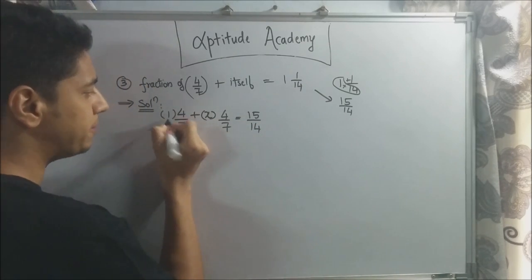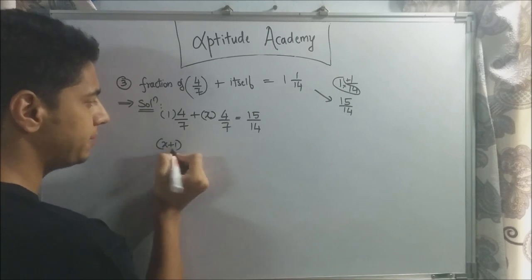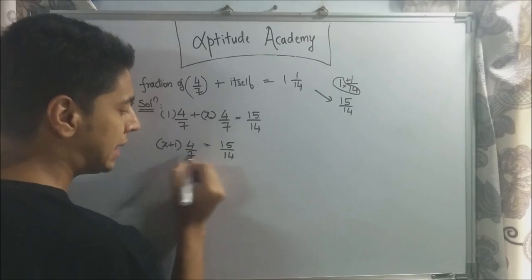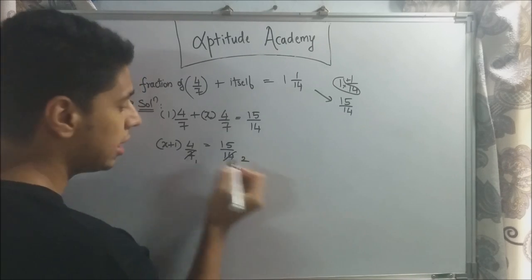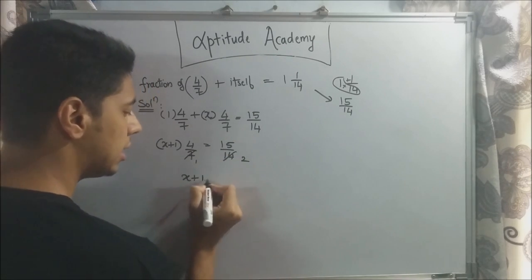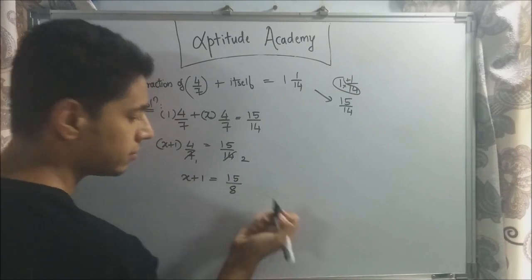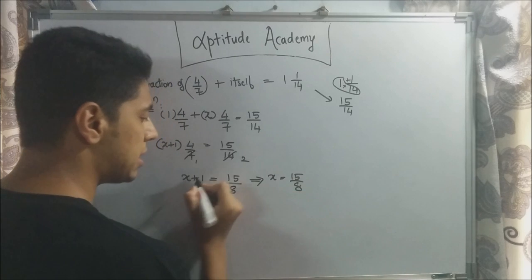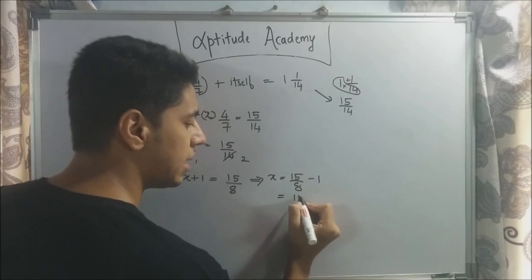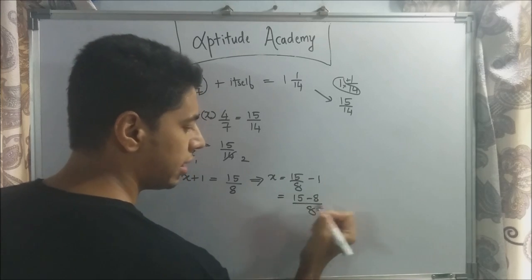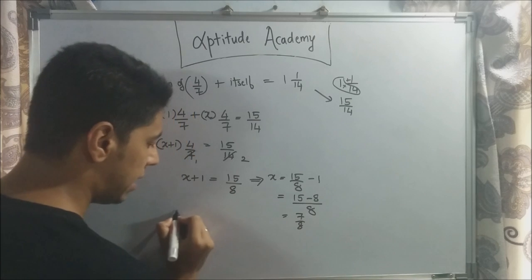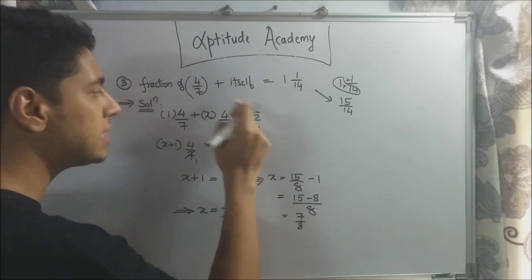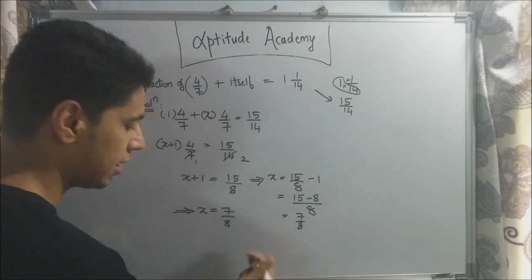Now, here this is multiplied by 1. This is the whole number. So now what you'll do is x plus 1 you take outside, and 4 by 7 is common, is equal to 15 by 14. Now, both are in the denominator, so 7 twos are, now 4 you will take it down. So x plus 1 is equal to 15, this 4 is taken down here, so 4 twos are 8, so 15 by 8. Now, you take it here, x is equal to 15 by 8, this plus 1 goes here, minus 1. So if you take an LCM, it will be 8 here, minus 8. So this is equal to 7 by 8, implies that the fraction x is equal to 7 by 8. So 7 by 8 of 4 by 7 plus 4 by 7 will be equal to 15 by 14. This is your final answer.